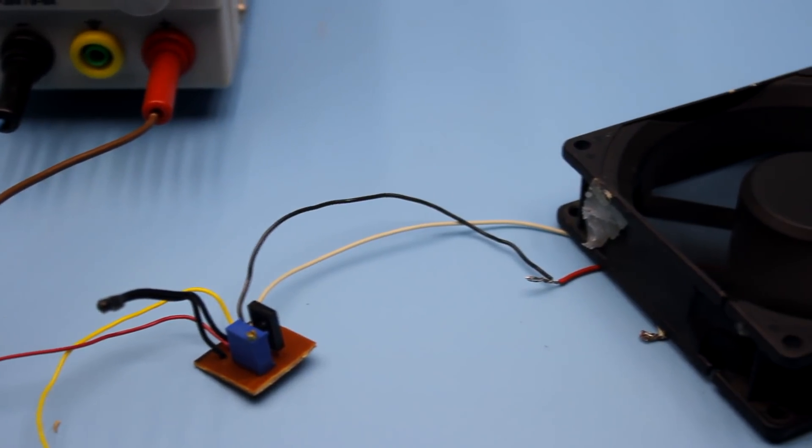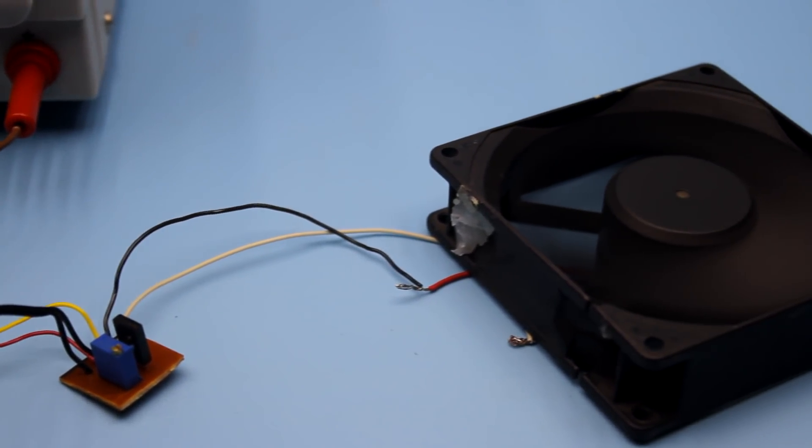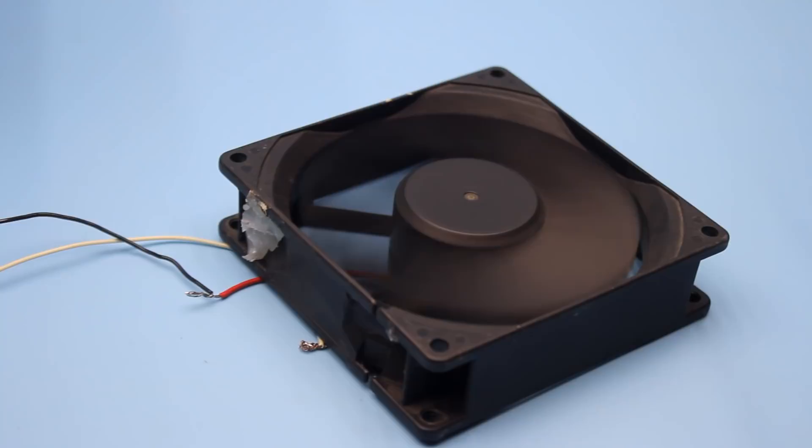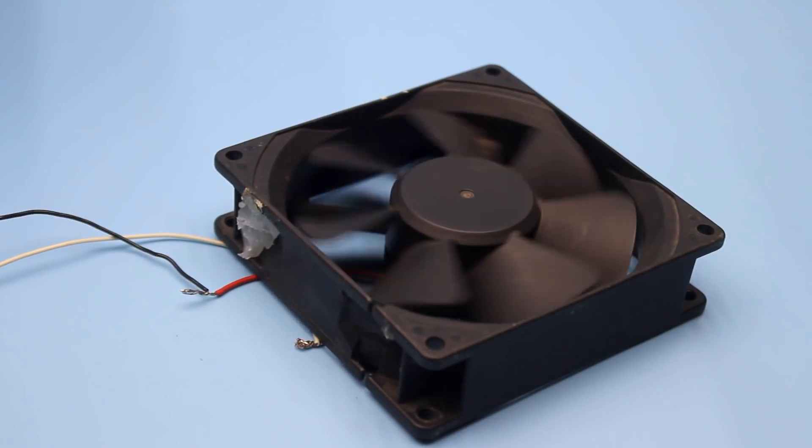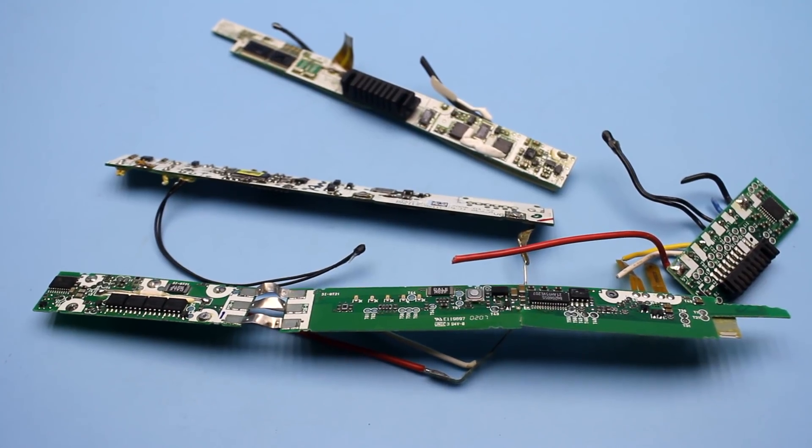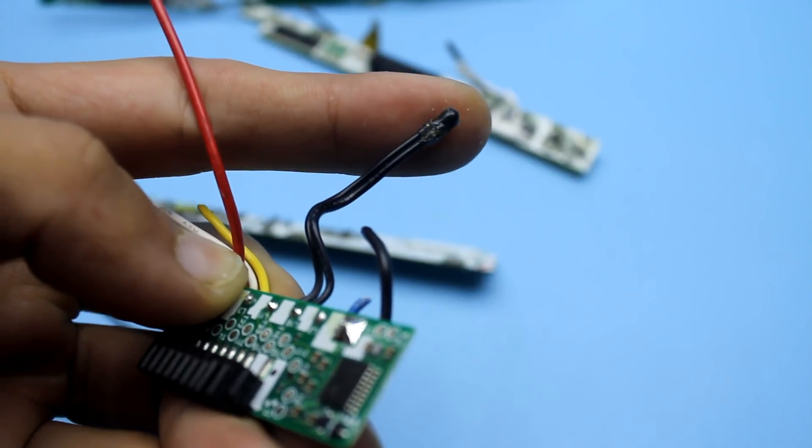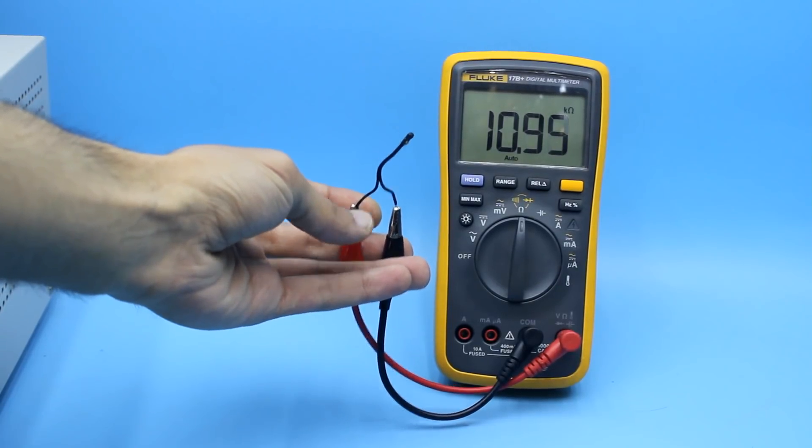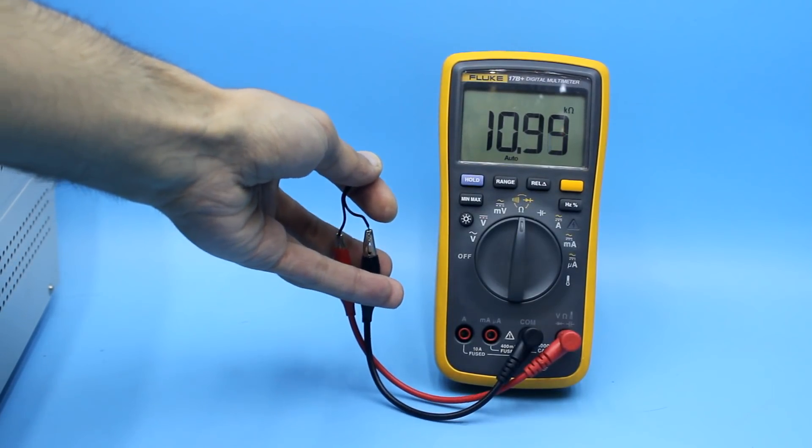Everything seemed to be good. The circuit is simple and quite working. But where to take a thermal sensor? The required thermistor can be found on the control boards in the laptop battery. Several specimens that I checked had an initial resistance at room temperature of about 10 kOhm.